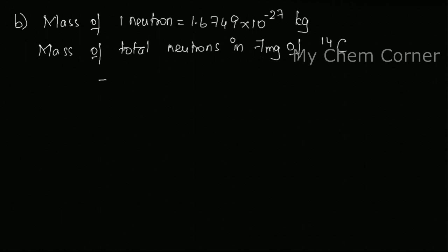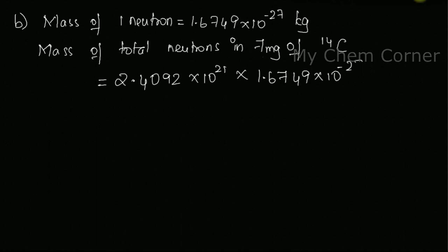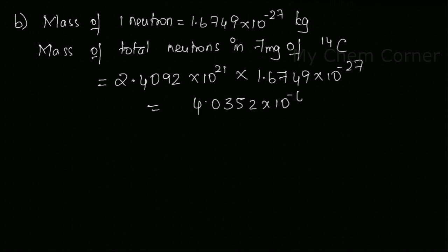The total number of neutrons in 7 milligrams, which we just calculated, is 2.4092 × 10²¹. Multiplying by the mass of one neutron, 1.6749 × 10⁻²⁷ kilograms, I get 4.0352 × 10⁻⁶ kilograms. That is the total mass of all neutrons in 7 milligrams of Carbon-14.